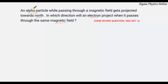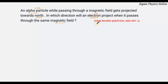So here we have an alpha particle. You know that alpha particle is a positively charged particle and electron is a negatively charged particle. So when an alpha particle is subjected to a magnetic field then it receives a force which is towards the north, that is it gets deflected towards the north. Now we are asked to find out if in the same magnetic field an electron passes by, in which direction would it be projected or in which direction would the force act on it.